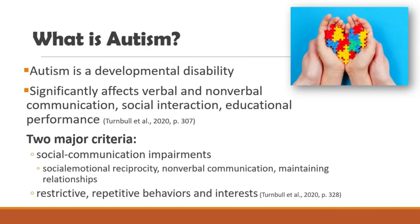There are two main criteria when talking about autism. The first is social communication impairments, which includes non-verbal communication, being able to maintain relationships, and having social-emotional opportunities. The second criteria is having restrictive repetitive behaviors and interests — being obsessed with something or showing a keen interest in a specific topic.